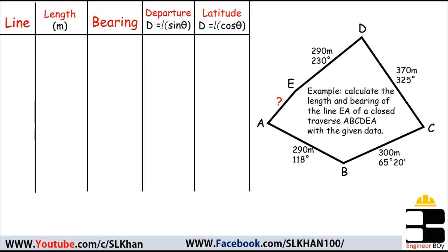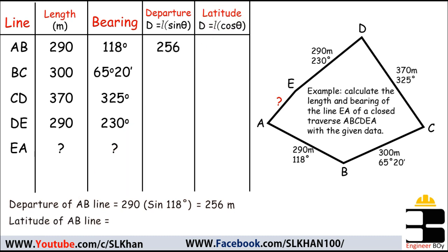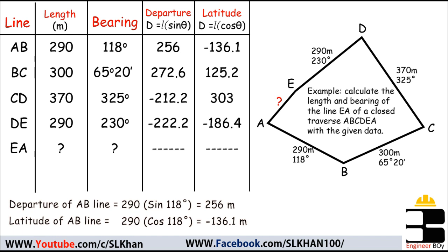I'll put all the given data into the table. The departure of line AB is the length (290) times sin of its bearing (118°), which gives a departure of 256 units. Similarly, the latitude of line AB is 290 times cos of 118°, which gives minus 136.1. The departure is positive and the latitude is negative, which means the line is in the second quadrant. The same method is used to determine the departure and latitude of lines BC, CD, and DE.